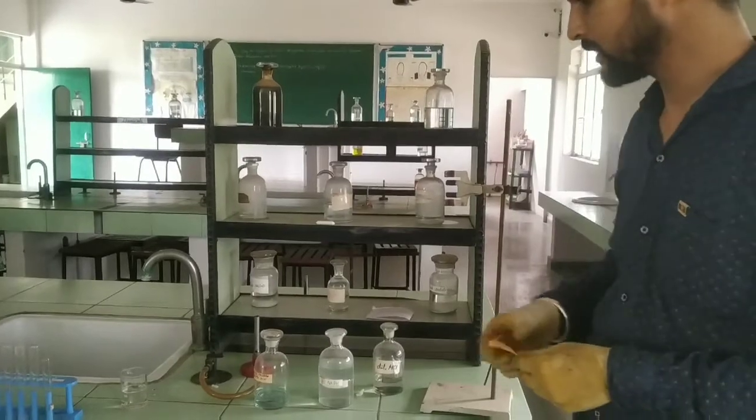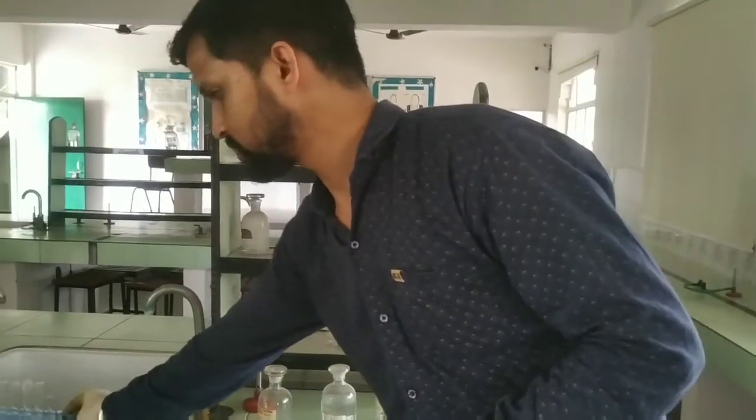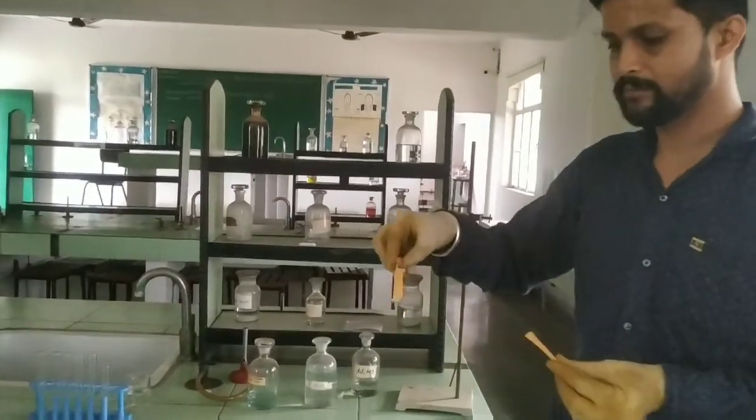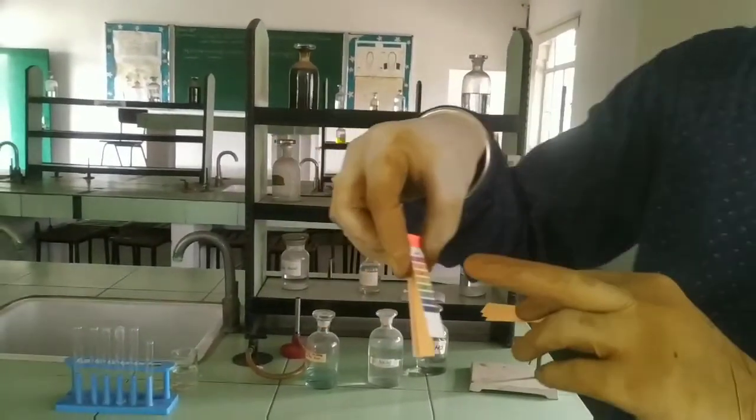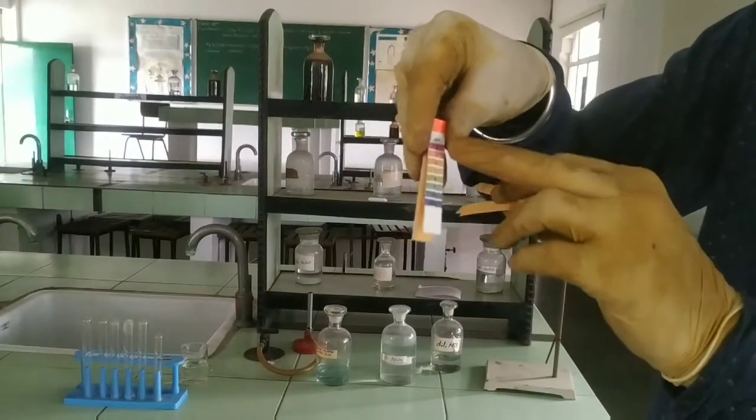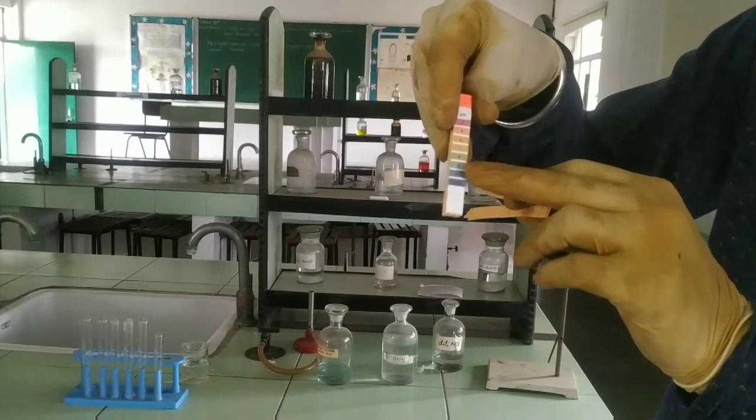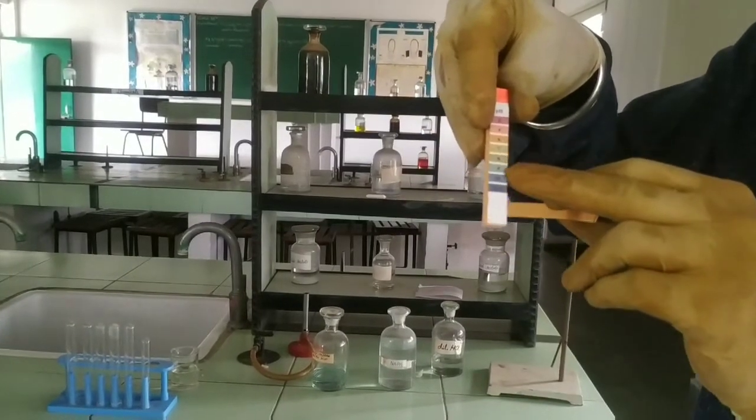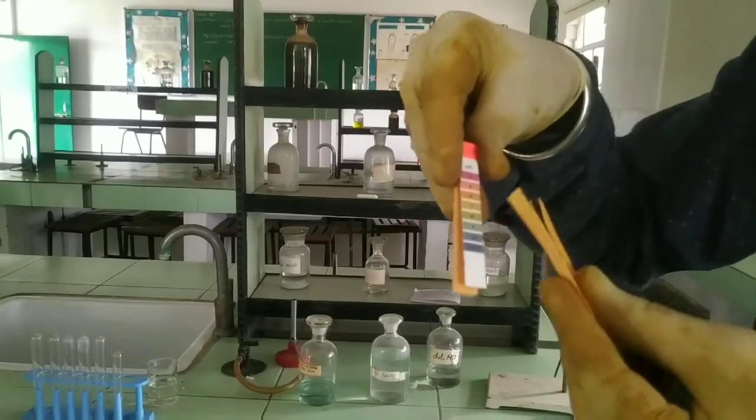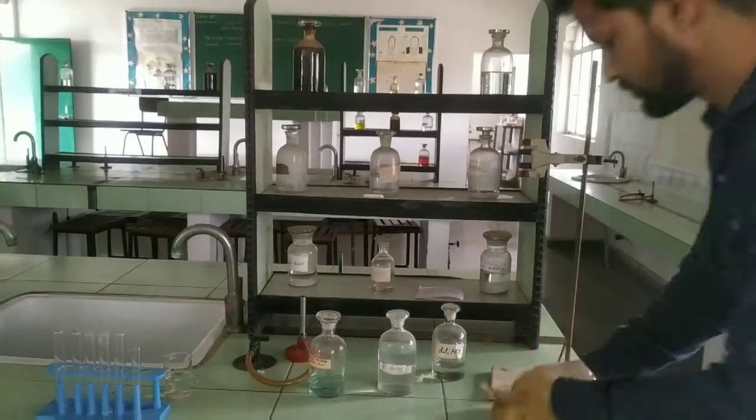Here we require the material: four test tubes and these pH papers which are used to calculate the pH. Here I have the pH paper and this is a table according to which we have to check the pH of the solution. Now I will show you the experiment with the dilute HCl.